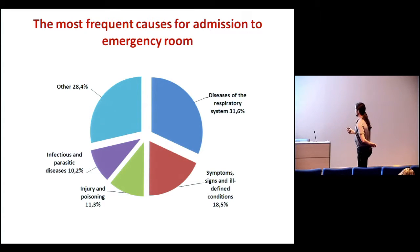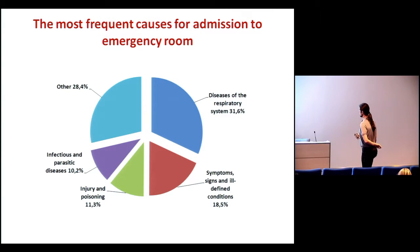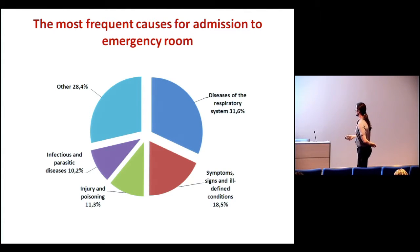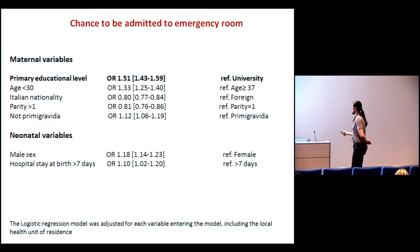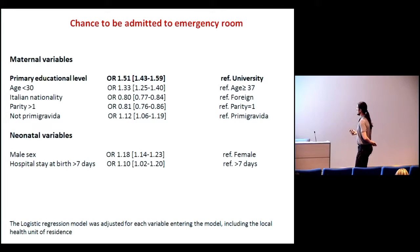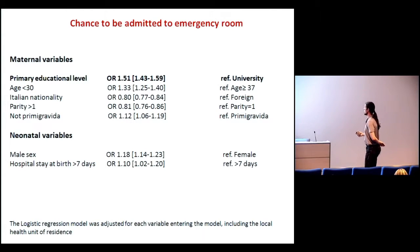Looking at the last outcome — admission to the emergency room — the causes for admission are very similar to those for hospital admission, with the addition of injury and poisoning, which is expected at the emergency department. The last multivariate analysis shows, however, a completely different picture compared to hospital admission, because neonatal variables did not play a role in emergency room admission. In this case, the most important variables were maternal variables, with primary educational level being the most important one.